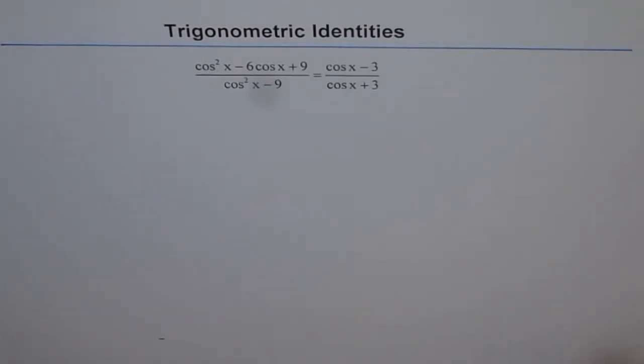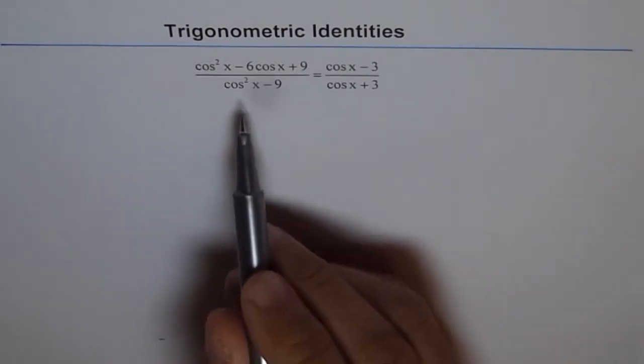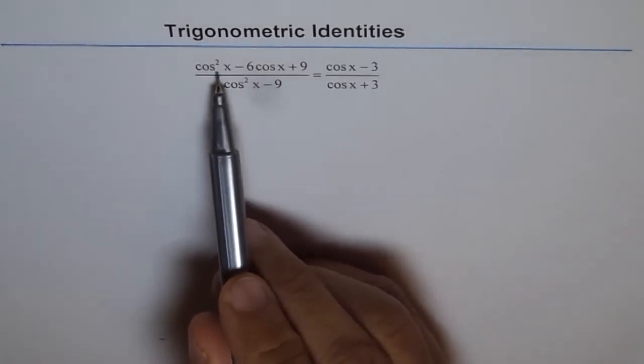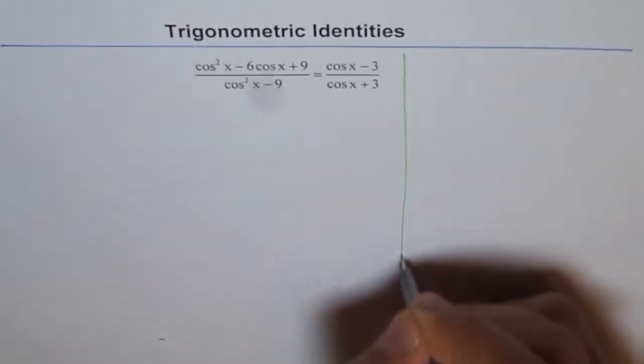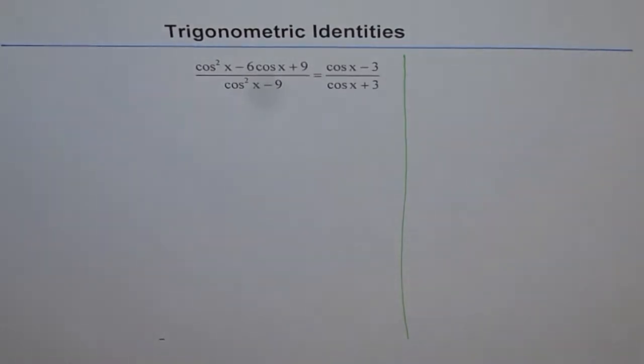Well, this one we can do by factoring because we see difference of squares here and we have a perfect square here. So, let me use the right hand side to show you what I am really doing to get you the solution.